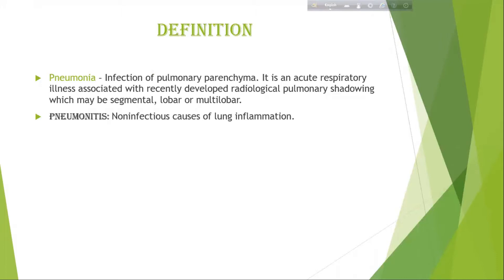Definition of pneumonia: Infection of pulmonary parenchyma. It is an acute respiratory illness associated with recently developed radiological pulmonary shadowing, which may be segmental, lobar, or multilobar. Definition of pneumonitis: Non-infectious causes of lung inflammation, like acid, alkali, or other corrosive agents.